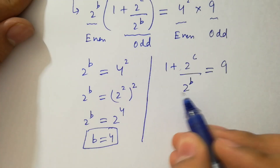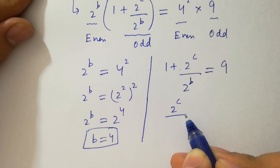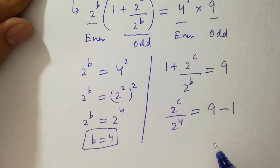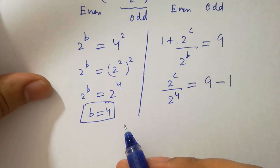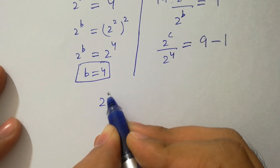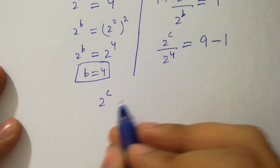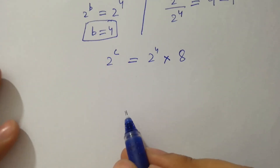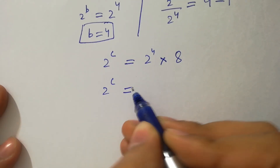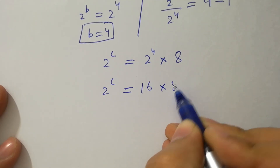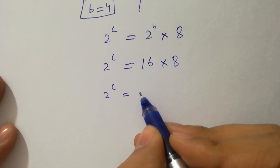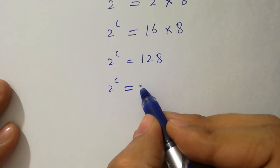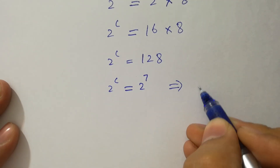Simplifying now: we have 2 to the power c over 2 to the power b, where b is 4, equal to 9 minus 1, which is 8. Multiplying by 2 to the power 4 on both sides, we have 2 to the power c equal to 2 to the power 4 times 8, which is 16 times 8, equal to 128. Since 2 to the power c equals 128 equals 2 to the power 7, we have c equal to 7.